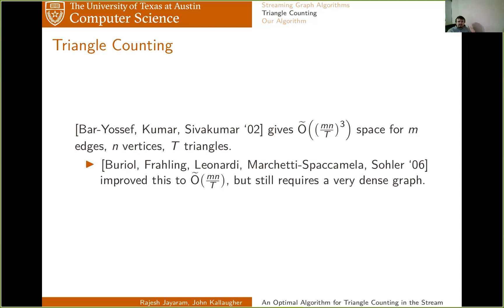This was later improved to M times N over T, which can be small because T can potentially be as large as M times N, but it requires the graph to be very dense. And in particular, if you think about the case of a sparse graph, where typically most of the vertices are going to have a constant degree, then it's not clear that this will give you anything sublinear at all. So, natural question to ask is, can you promise anything stronger for sparse graphs, which, after all, are one of the most common kinds of graphs in real world applications?